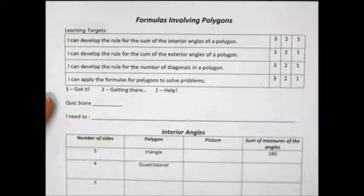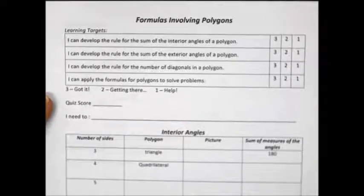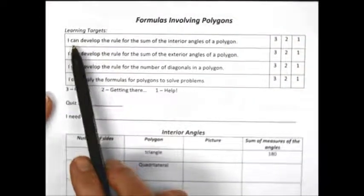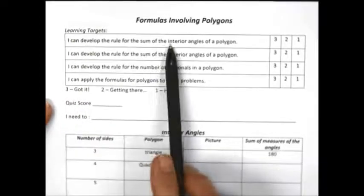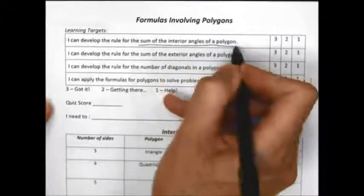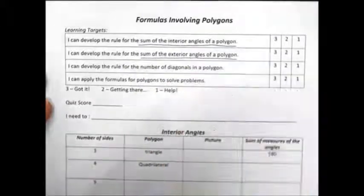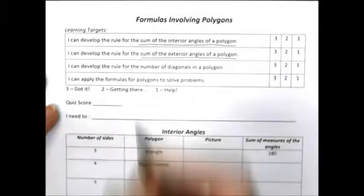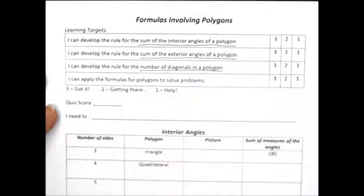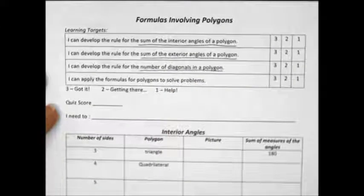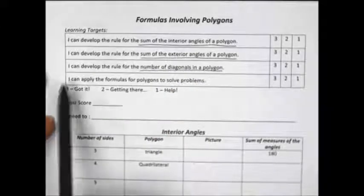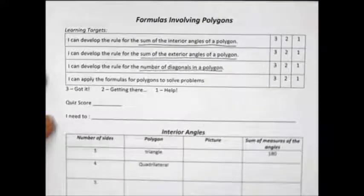Today's lesson is section 7.3. It deals with formulas involving polygons. Looking at the learning targets, we're going to develop three rules or formulas — not just be given them. First, I can develop the rule for the sum of the interior angles of a polygon. Second, the sum of the exterior angles. Third, the number of diagonals in a polygon. Then we'll practice using those formulas to solve different problems.